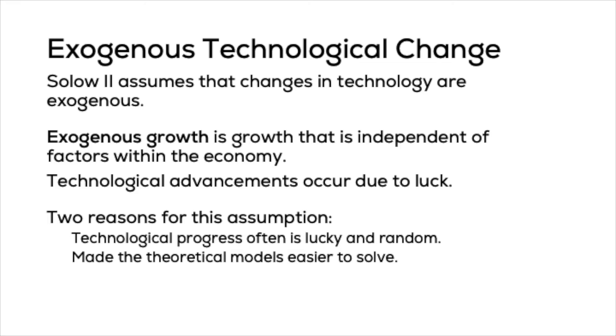The problem is Solow Growth Model 2 assumes that changes in technology are exogenous — meaning from outside of the model. Where technology comes from is unexplained. Exogenous growth is growth that is independent of factors within the economy. Solow Model 2 relies on this because economists believe technological progress often seems random and a function of luck, and assuming technology is exogenous makes the theoretical model easier to solve.